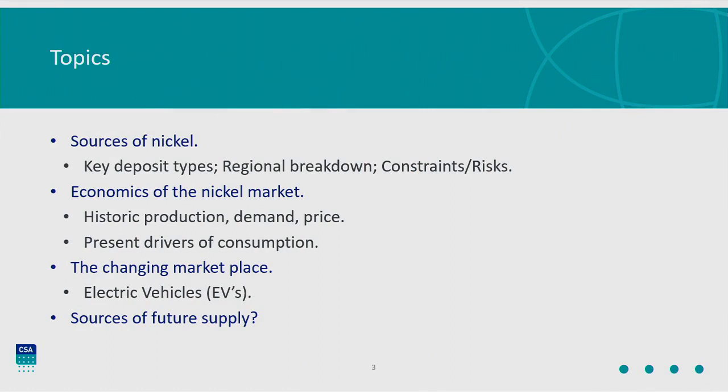Just a brief introduction on the topics of the talk today and how we're going to go about it. First of all, we'll have a quick look at the sources of nickel, because the sources of nickel dictate how you process nickel, and how you process nickel dictates what you can do with it to some extent. So we'll look at the key deposit types, the regional breakdown, and the constraints and risks around that.